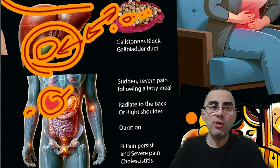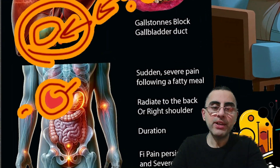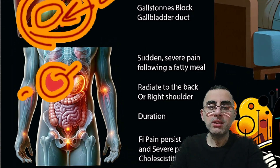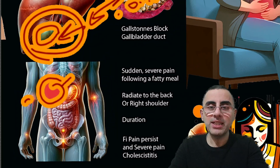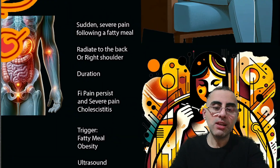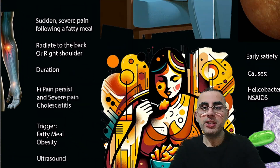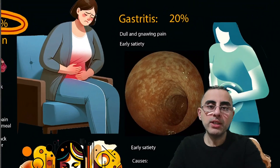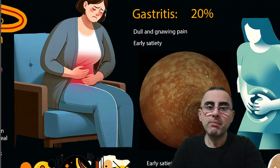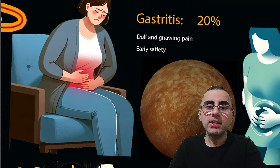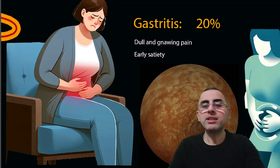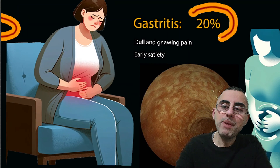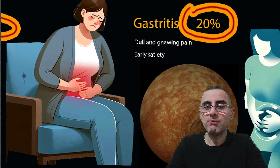Treatment for cholecystitis includes antibiotics to stop the infection, and in many cases surgical removal of the gallbladder. So if the pain is transient, it is biliary colic. If the pain persists and will not go away on its own, it is cholecystitis, and the treatment is surgery.